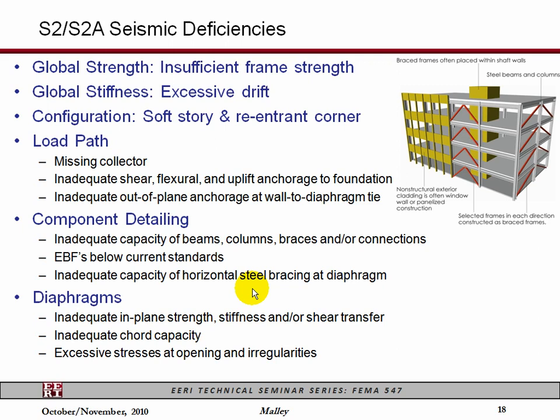Now let's talk about brace frames. In these cases, primarily you're going to be looking at strength issues and potentially components that are not as ductile as we'd like them to be, and connection issues. A lot of the problems with brace frames are that potentially the components themselves are not going to be able to go through the deformation levels that we hope they would. In the past, in the older versions of concentric brace frames, the connections might not be strong enough to develop the capacities of the members, and therefore we can get to some connection issues.